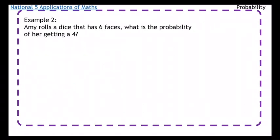Example two, Amy rolls a dice that has six faces, what is the probability of her getting a four? So we've got six faces and hopefully you know that each face will have the number one, two, three, four, five and six if you've seen a dice before.